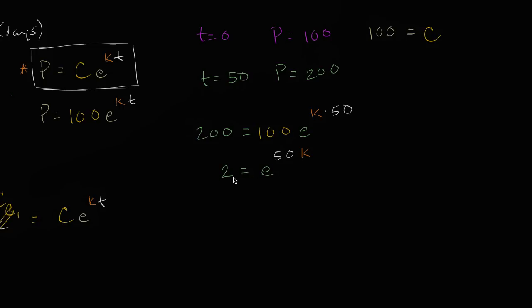Then we can take the natural log of both sides. Natural log on the left hand side, we get the natural log of 2. And on the right hand side, the natural log of E to the 50K, well that's just going to be the power that you need to raise E to, to get E to the 50K. That's just going to be 50K.